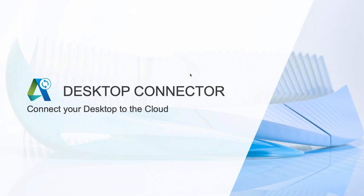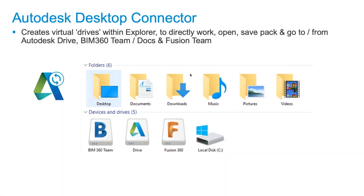That is the Desktop Connector — a technology that, once you join up with a Fusion Team Hub, installs as a utility and runs right in your system tray. What this does is give you access from Windows Explorer to the cloud, much like OneDrive, Box, or Dropbox — anything you put in a folder acts as a watch folder. The advantage, though, is that this is CAD aware.